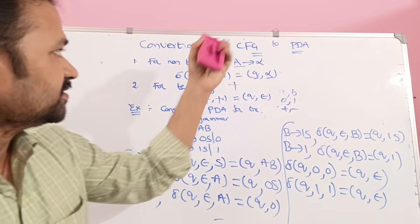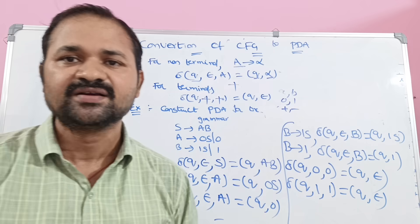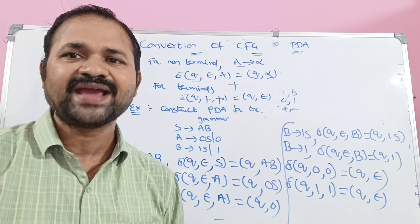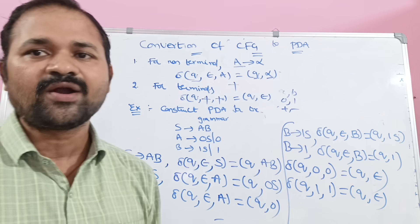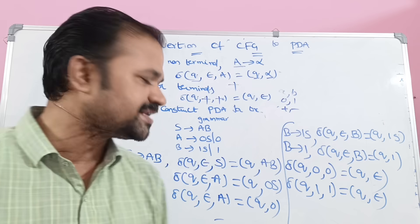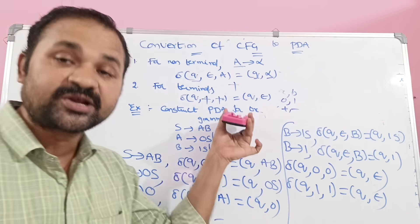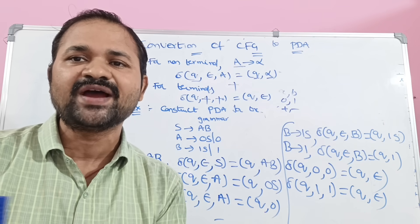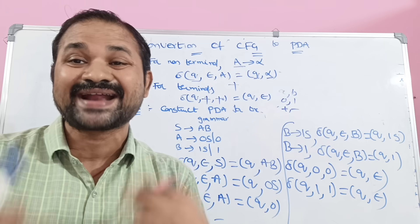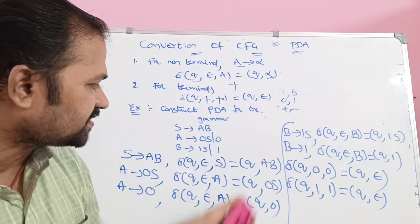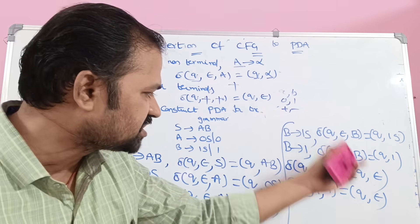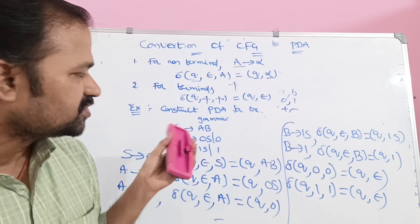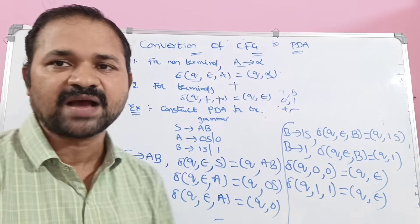So here, context-free grammar is given, and for the corresponding context-free grammar, we have to find out the PDA. Context-free grammar means mainly grammar productions will be given, whereas in PDA, we mainly have to find out the delta transition functions. These are the transition functions for the corresponding grammar, and this is the PDA for this grammar.